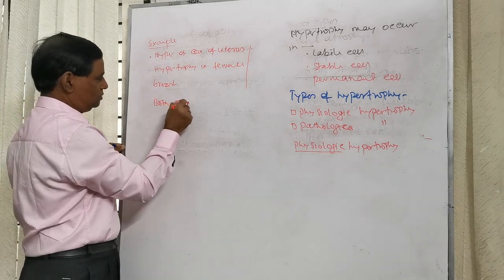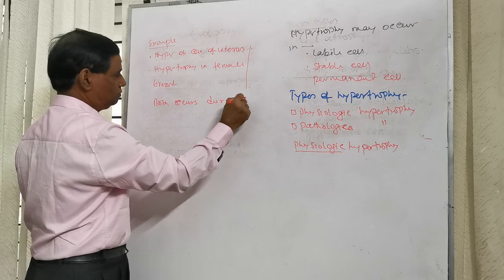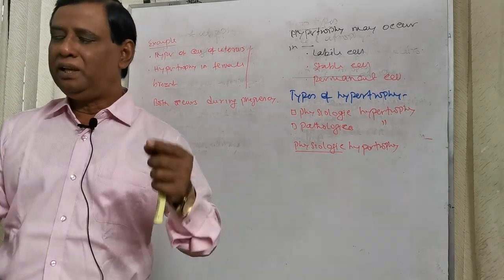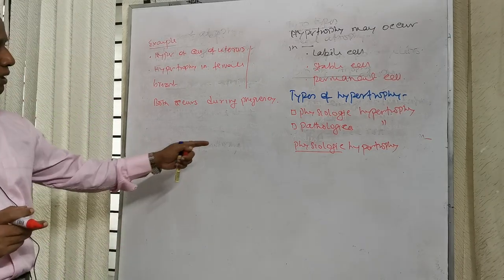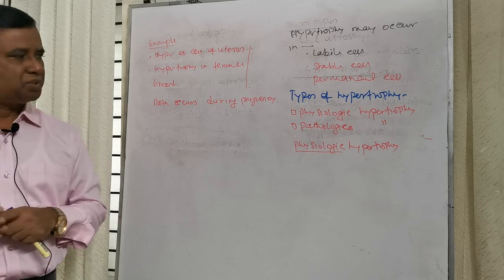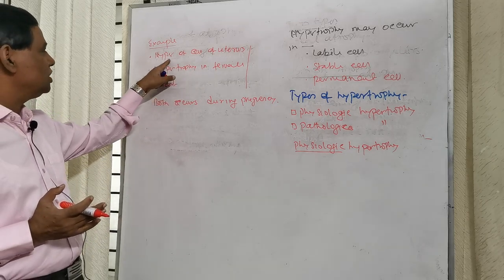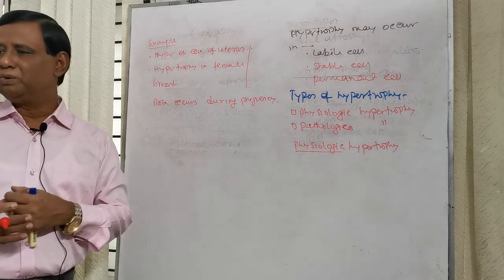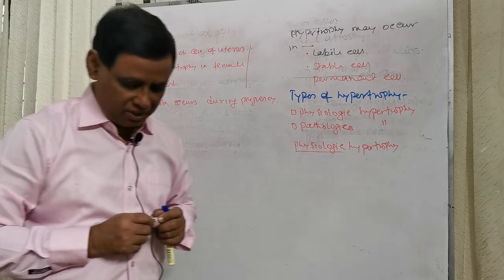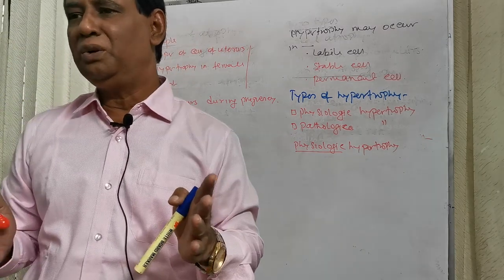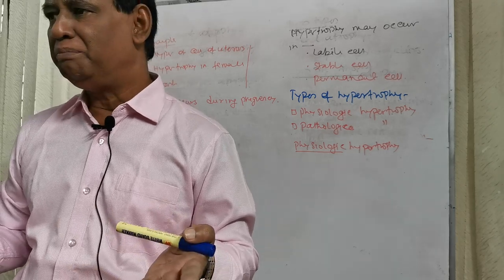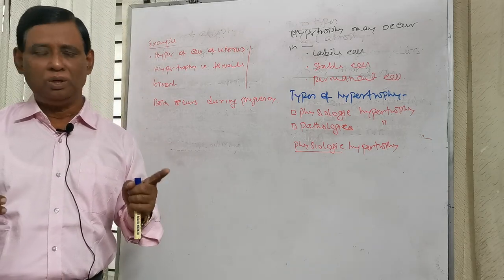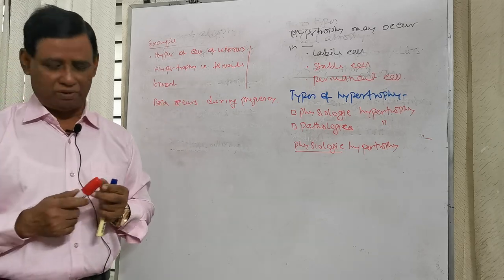In pregnancy, what is the cause of hypertrophy? The cause is hormonal stimulation. There is estrogen stimulation in the uterus and also in the female breast, so the cells undergo hypertrophy due to hormonal stimulation. This is physiologic hypertrophy. If there is no hypertrophy during pregnancy, the pregnancy may not be continued. Since pregnancy is a physiological condition, this hypertrophy is physiologic hypertrophy.